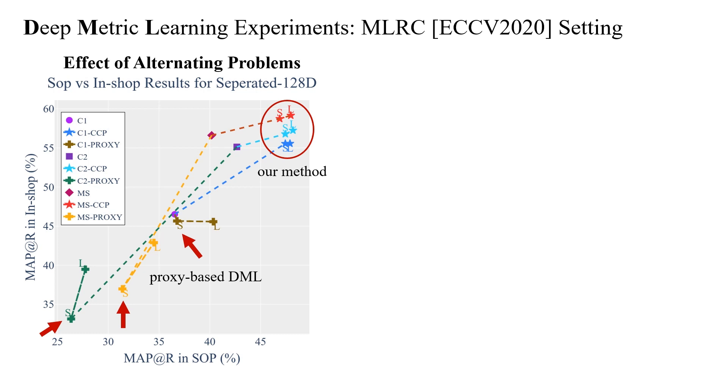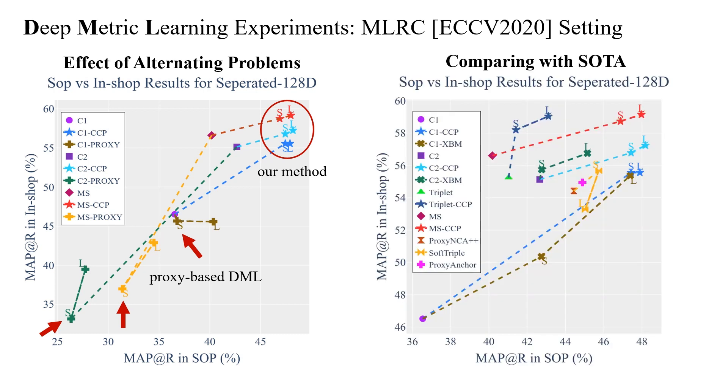Comparing our method with other state-of-the-art proxy-based approaches, the results speak for themselves. Our method consistently emerges as a superior learning mechanism showcasing substantial improvement margins over the losses it addresses. Notably, it surpasses the previous state-of-the-art by a significant margin even with the same number of proxies. These benchmarking outcomes underscore the effectiveness and competitiveness of our approach in the field of metric learning.